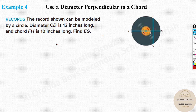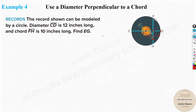Now a real-world problem: a record shown can be modeled by a circle. The diameter CD is 12 inches long, so the radius is 6. Chord FH is 10 inches long; since the diameter bisects the chord, each half is 5 inches. We need to find EG — the distance from the center to the chord.